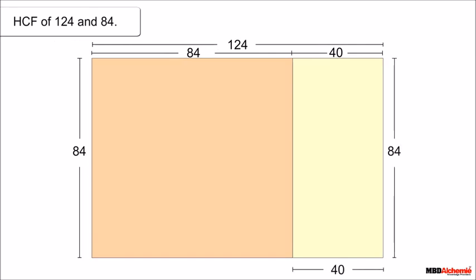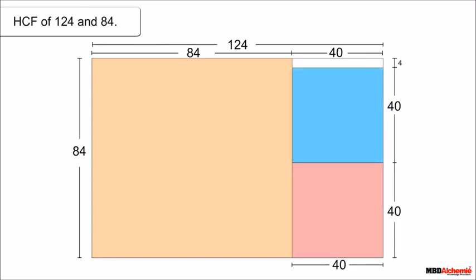The remaining rectangle is of size 40 × 84. The square of maximum size that can be drawn within this area is 40 × 40, and we can draw one more square of 40 × 40. This time the remainder is a rectangle of size 40 × 4.